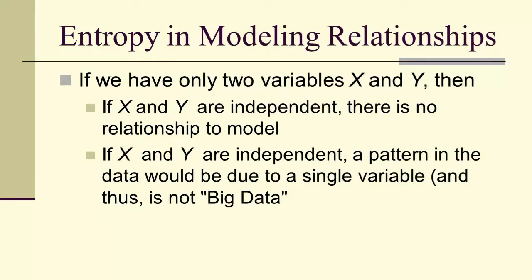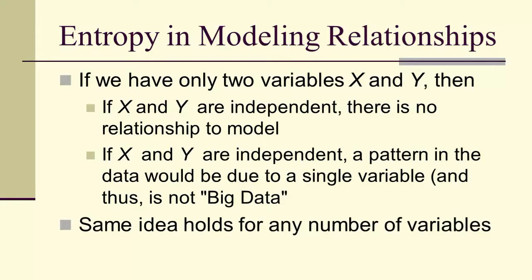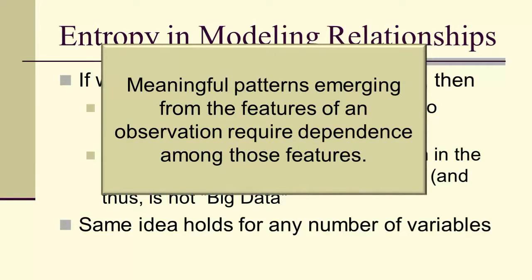So if we had a pattern in the data and we only have two variables, then x and y would be independent and there's therefore no big data there. We only have patterns due to a single variable. And the same idea, of course, holds for any number of variables. So if we want meaningful patterns, we need dependence among the individual features.